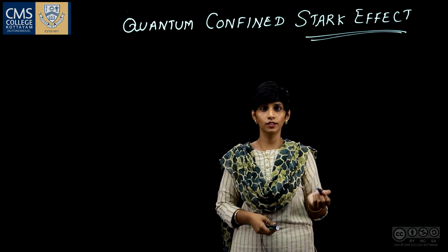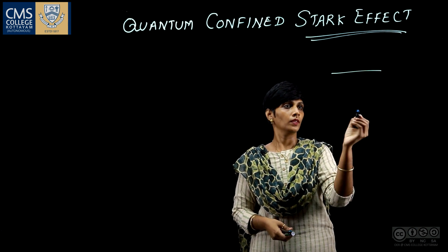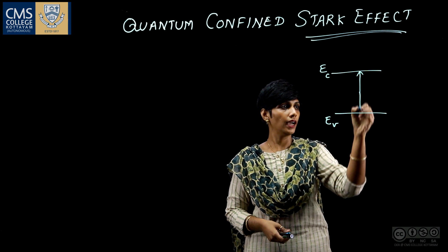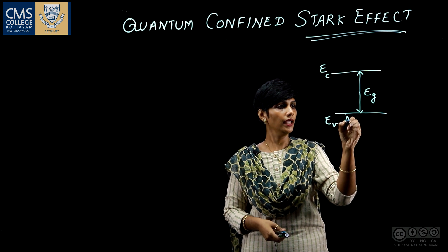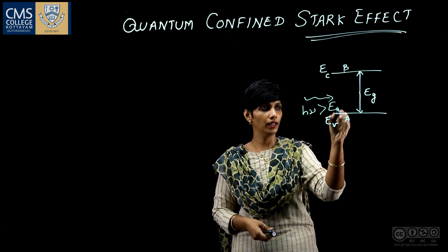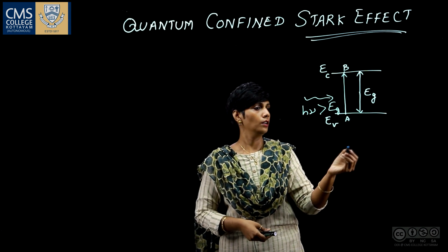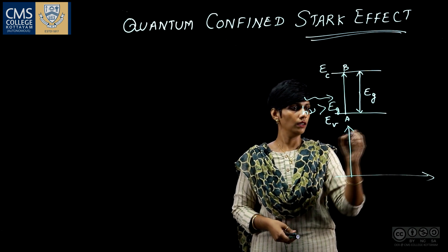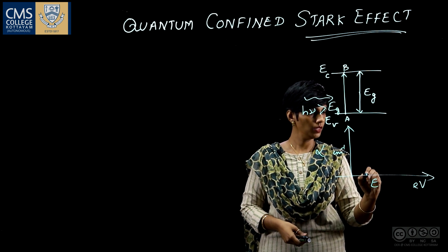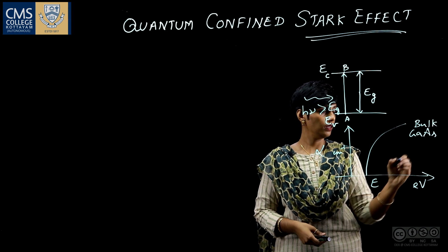First let us understand the effect of electric field in bulk semiconductor. In the case of bulk semiconductor, we know that the semiconductor has a valence band and a conduction band, and they have the energy gap Eg between them. Now let us consider two points A and B. When a photon of energy hν greater than the band gap energy falls, the electron from point A makes an upward transition. We can understand from the absorption spectra that we get a structure like this in the case of bulk gallium arsenide at room temperature.